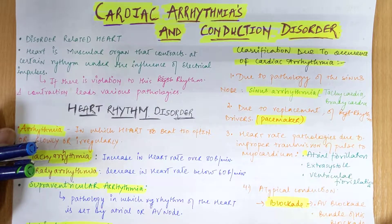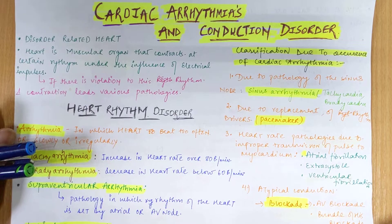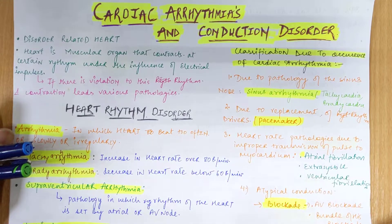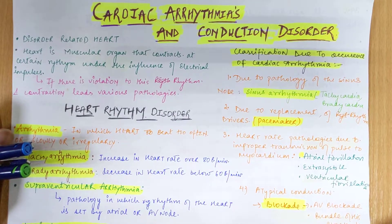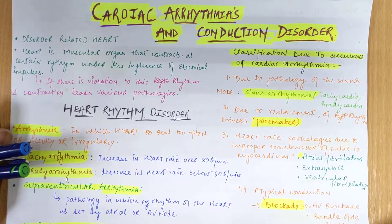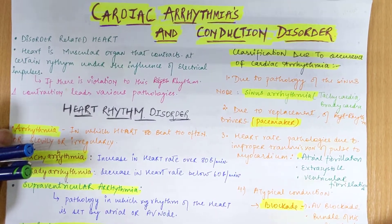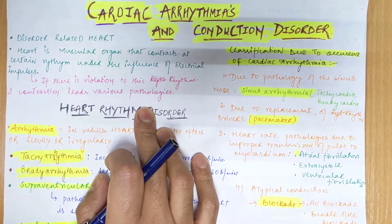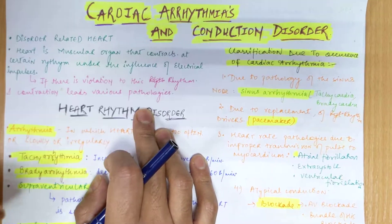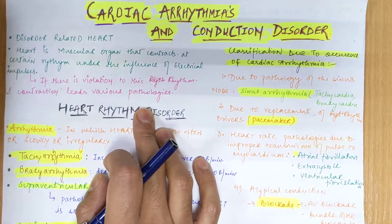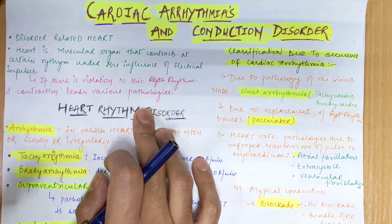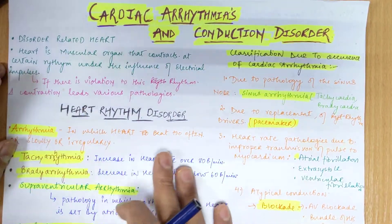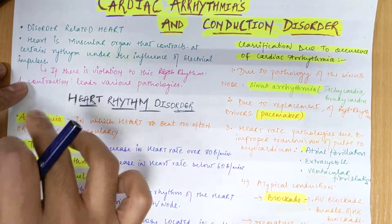Before knowing the pathologies, we must know how the basic functioning of the heart actually works. The heart is a muscular organ that contracts to maintain the flow of blood. It occurs at a certain rhythm under the influence of electrical impulses present in the heart. There is a rhythm which contracts blood from atria to ventricles and further to other organs. If there is any violation of this rhythm, it leads to arrhythmias or other cardiac pathologies.